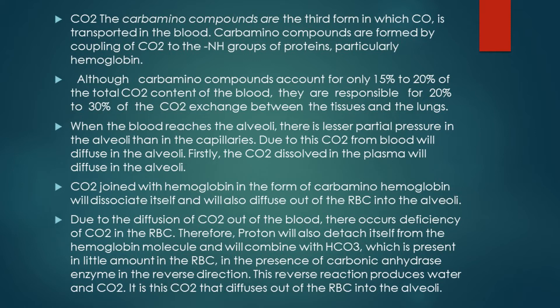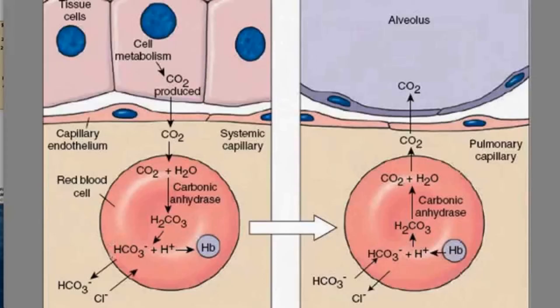All these processes occur in the blood present in the capillaries above the tissues. This blood is then drained into the venous system, which transports these substances to the alveoli of the lungs. When this blood reaches the alveoli, the partial pressure of carbon dioxide in the alveoli is less than in the capillaries. Due to this, carbon dioxide from the blood continues to diffuse into the alveoli. Firstly, the carbon dioxide that is dissolved in the plasma diffuses into the alveoli.